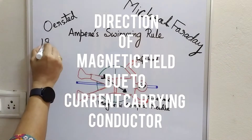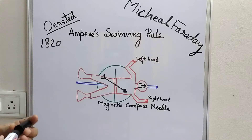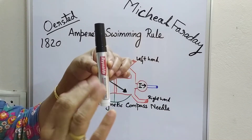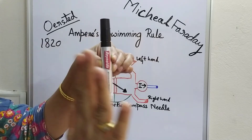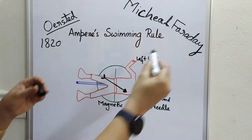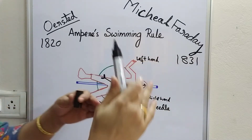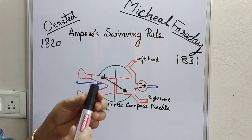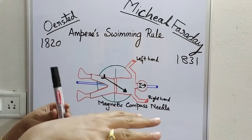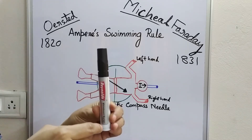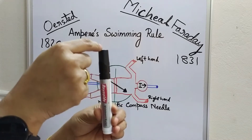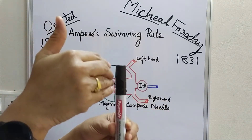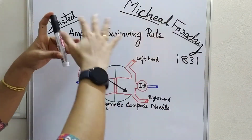In the year 1820, Hans Christian Oersted accidentally found that a current-carrying conductor sets up a magnetic field around it — meaning if there is current in a conductor, a magnetic field can be produced. Then in the year 1831, just the reverse process was found by Michael Faraday: if there is a magnetic field and a conductor is placed in it, electric current can be induced. So current can produce a magnetic field, and a magnetic field can produce current — two reverse processes found by these two people.